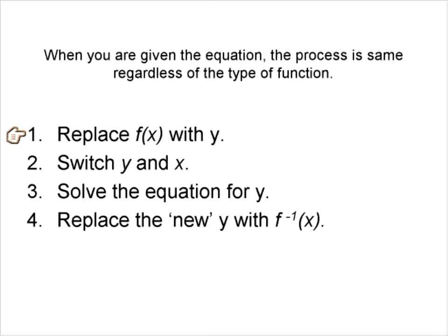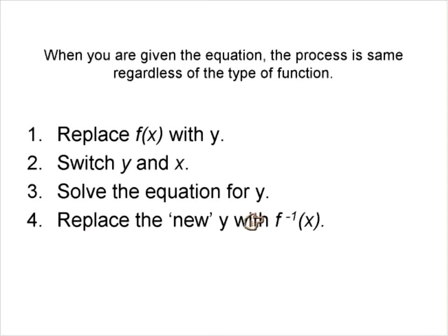The four steps are: first, if given function notation f(x), replace f(x) with y. Second, switch the x and y values around — that's what the inverse is. Third, take the new equation with switched variables and solve it for y, doing all the math necessary. Fourth, replace the new y with the inverse notation f⁻¹(x). Follow these four steps every single time.